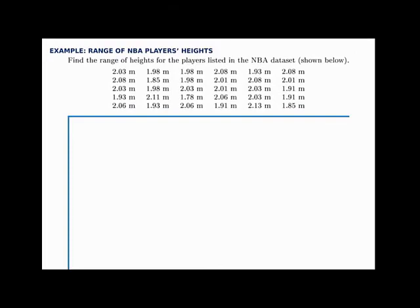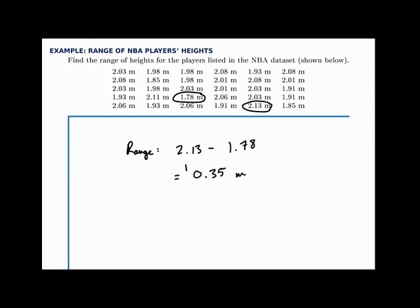Here we'll find the range of a data set — the heights of the players in the NBA data set. The range is the difference between the smallest and the largest. We look through the list and find the lowest number is 1.78 meters — the shortest player — and the tallest player is 2.13 meters. The range is 2.13 minus 1.78, which is 0.35 meters. This is a simple way of measuring how spread out data is: if the range is larger, it's more spread out; if smaller, it's more tightly clustered.